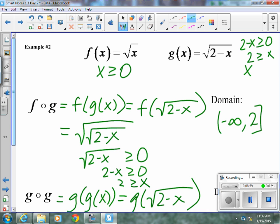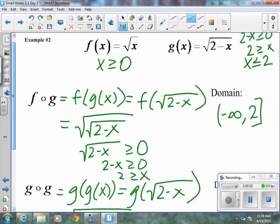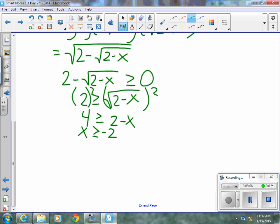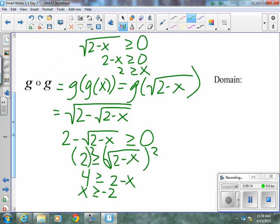But our outer function, or our final answer, was x is greater than or equal to negative 2. Where does x is greater than or equal to negative 2 and x is less than or equal to 2 overlap? And that is from negative 2 to 2. And if you need to sketch them both on the same number line to see where it should be double shaded, you can.